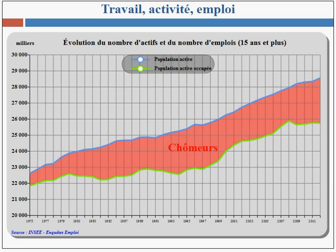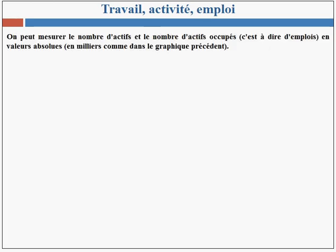L'écart entre les deux courbes s'est donc accru. Cet écart représente en fait le nombre de chômeurs. Comme dans le graphique précédent, on peut mesurer le nombre d'actifs et le nombre d'actifs occupés, c'est-à-dire d'emplois, en valeur absolue, c'est-à-dire en milliers.